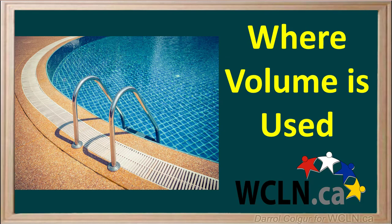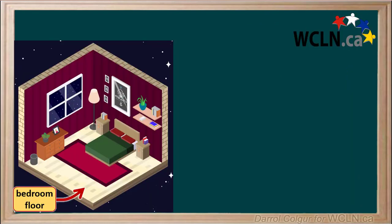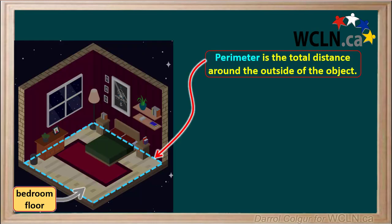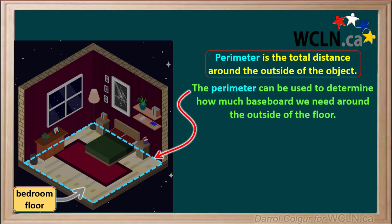Volume is used in many aspects of our daily life. Let's consider a bedroom in a house. Remember the perimeter is the total distance around the outside of the floor. If we're putting baseboard around the floor, the perimeter would tell us the total length of baseboard we need.